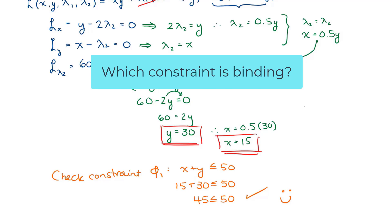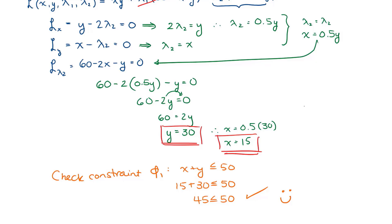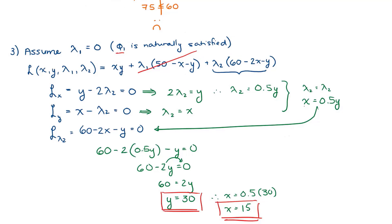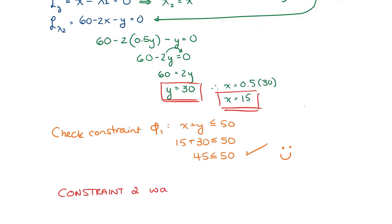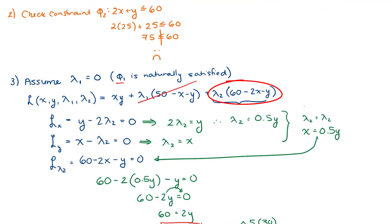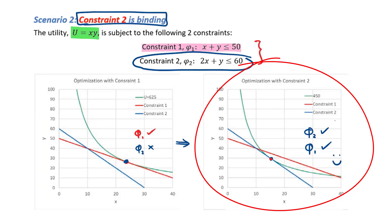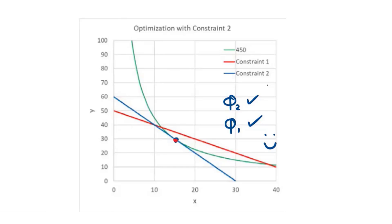Which constraint is binding? We solved it assuming constraint 1 was naturally satisfied, therefore constraint 2 was the binding constraint — the one employed in our solution. We assumed constraint 1 was being naturally satisfied. Visually, this was our scenario 2. You can even see this in the visual: when we did our optimization with constraint 2 as our binding constraint.